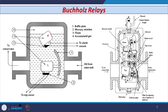The Buchholz relay is connected such that oil comes from the main tank on one side and goes to the conservator tank on the other. A baffle plate is also connected to the lower float. Whenever a small minor fault occurs in the transformer, the upward thrust provided by the oil disturbs the balance of the upper float — which was maintained by buoyancy — and the oil level drops because of bubble formation. This activates the mercury switch just below the upper float, which issues an alarm circuit.